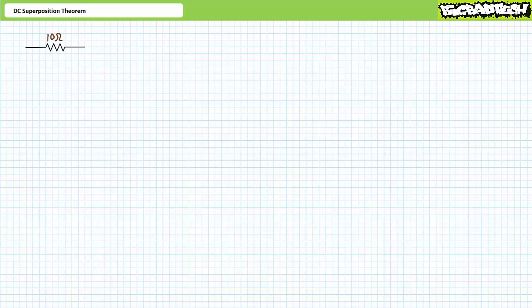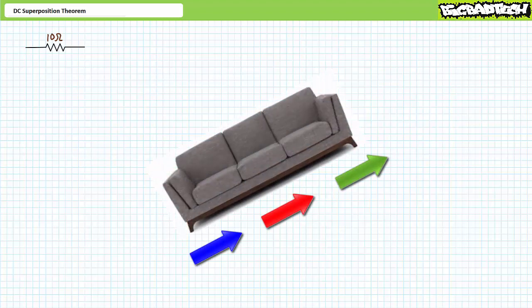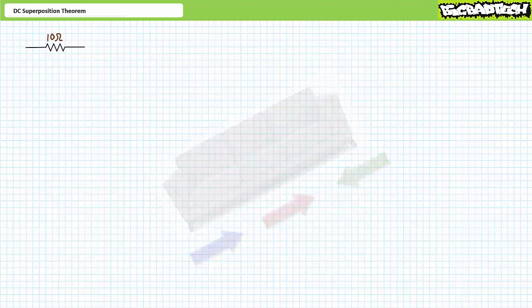The superposition theorem is the simplest and most reliable of circuit analysis techniques because it makes so much intuitive sense. When tasked with carrying a couch upstairs with a group of friends, it helps when they're all pushing in the same direction. If one of your stupider friends is under the assumption that you're moving out rather than moving in, their opposition reduces the resultant effects. If you are the stupid friend opposing everyone else's combined efforts, your smaller contribution will be overwhelmed. Long story short, don't have stupid friends help you move a couch upstairs.